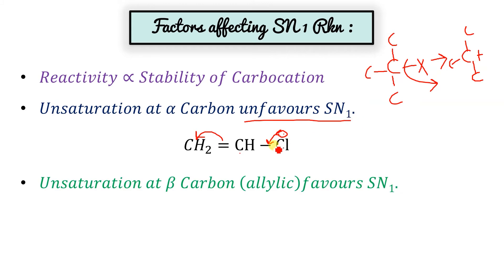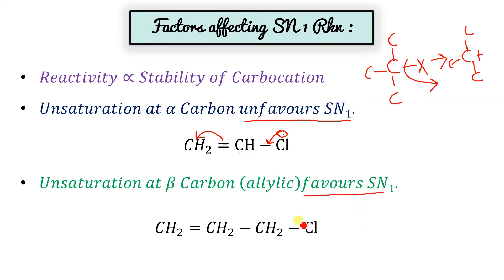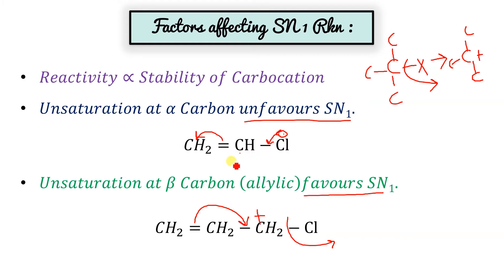Unsaturation at the beta carbon — that means allylic — favors SN1. If Cl minus goes out, it will form a carbocation, and this carbocation is resonance stabilized. That's why here it easily removes. But if Cl is bonded to the sp2 carbon, it is itself resonance stabilized and this bond won't break — so allylic favors SN1.